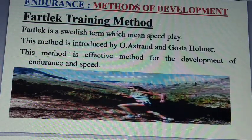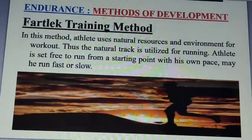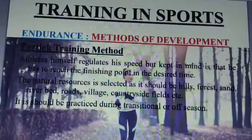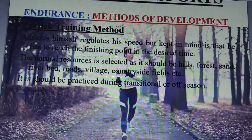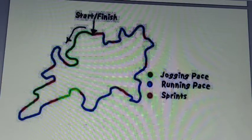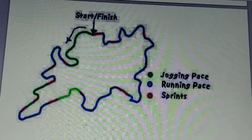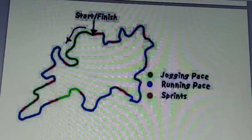Fartlek is a Swedish term which means speed play. This method was introduced by O.S. Trend and Gosta Holmer. It is an effective method for the development of speed and endurance. In fartlek, a natural environment is used — a person runs in a jungle, climbs a mountain, comes back, does a riverbed walk, simple jogging, mixed walking, jogging, and slow running. A disadvantage is the absence of an official ground — there are no standard measurements, and one might encounter dangerous things like snakes.